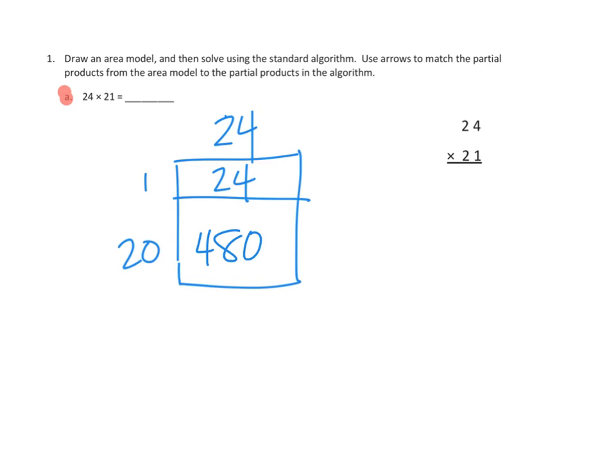Let's see how that translates when we go over and we do the standard algorithm here on the side. Now in a very similar way, we're going to multiply 1 times the 24, and that's really simple, that's 24. And I'm noticing something right away, which is there's our first partial product. Our 24, 1 times 24 is 24, and we get it on both sides.